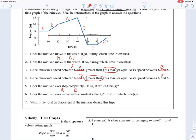Does the minivan ever move with a constant velocity? Yes, it moves with a constant velocity at B, at C, at D, and at F. This is where the lines are straight. Straight line means constant velocity.